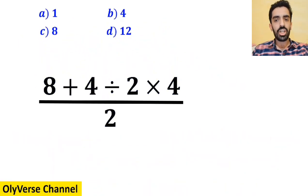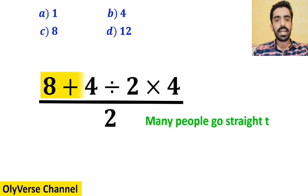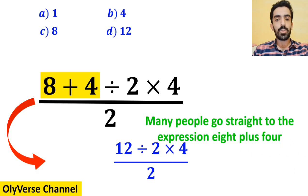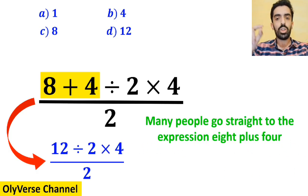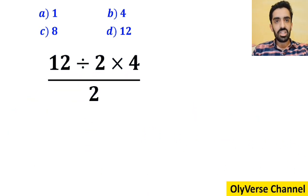As the first step to solve this question, many people go straight to the expression 8 plus 4 in the numerator of this fraction and replace the whole expression with 12 divided by 2 times 4 over 2.